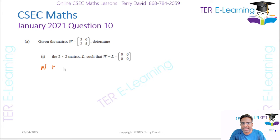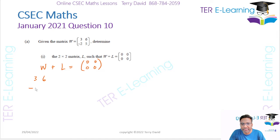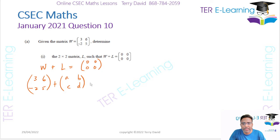W plus L is equal to the zero matrix. The matrix W is [3, 6; -2, 5]. You're adding it to some matrix L, which we don't know — let's call it [A, B; C, D]. And that is equal to [0, 0; 0, 0].